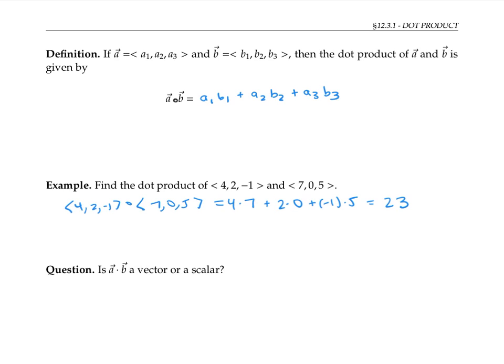Notice that the dot product of two vectors is a scalar, not a vector. Although I've defined dot product for vectors with three components — three-dimensional vectors — it's also possible to define dot products analogously for two-dimensional vectors, or even n-dimensional vectors.